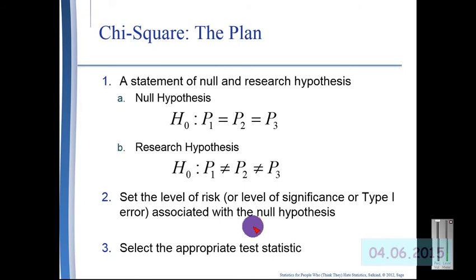We set our level of risk, i.e. the significance level, or how much risk we are willing to take of committing a type 1 error. And then we select the appropriate statistic.